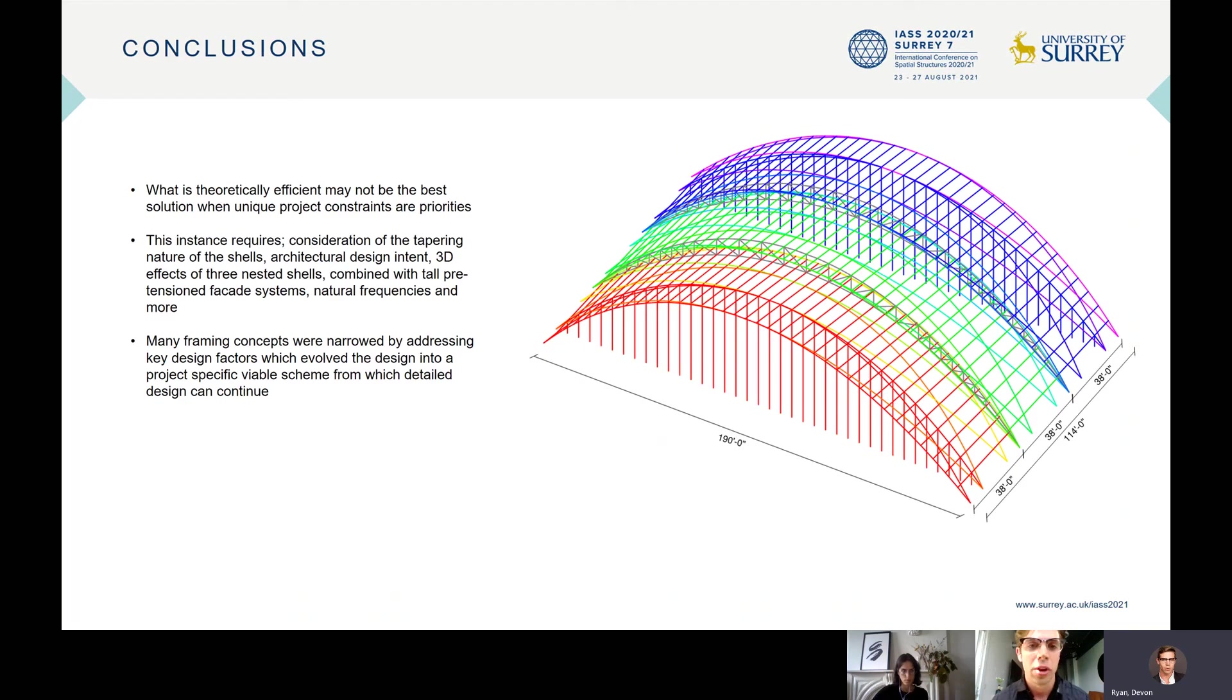So some takeaways from this case study, what is theoretically efficient may not always be the best solution when there are unique project constraints or priorities. And also, this instance requires consideration for the tapering nature of the shells, architectural design intent, 3D effects of the three nested shells, this combined with the tall pre-tension facade systems, natural frequencies, and more.